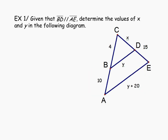Let's look at an example using the splitter theorem. We're given that BD is parallel to AE — let's mark that off. From those parallel lines we get congruent corresponding angles: angle CBD is congruent to angle CAE, and angle CDB is congruent to angle CEA. We're asked to find the values of X and Y. BD is splitting sides CA and CE proportionally, and since X is on the upper part of side CE, we can set up a proportion using the splitter theorem to find it.